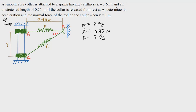Welcome back everybody, we're going to do another dynamics problem. This problem says: a smooth two-kilogram collar is attached to a spring having a stiffness k equals three newtons per meter and an unstretched length of 0.75 meters. If the collar is at rest from point A, determine its acceleration and the normal force of the rod on the collar when y equals one.